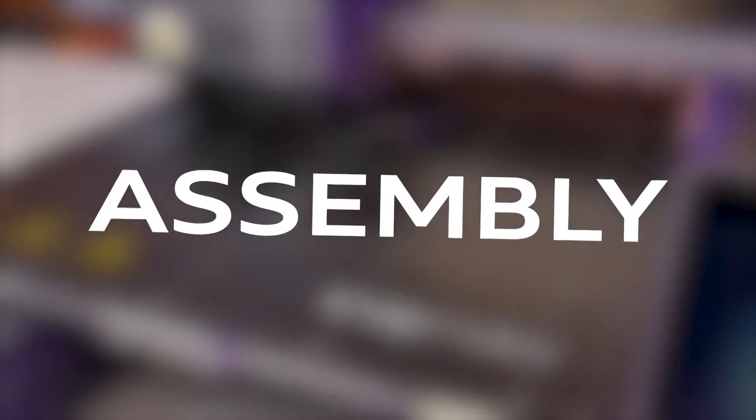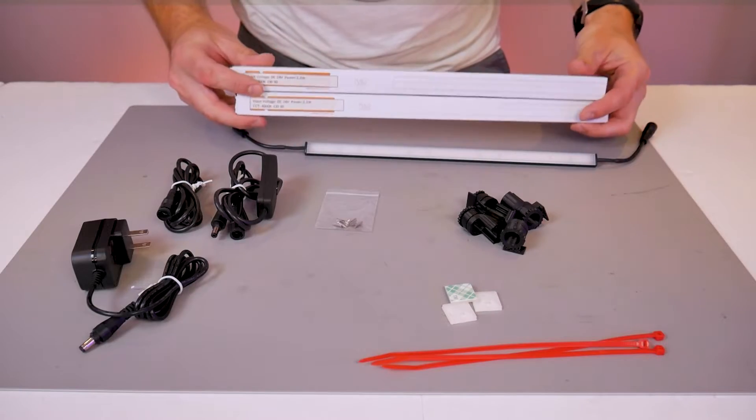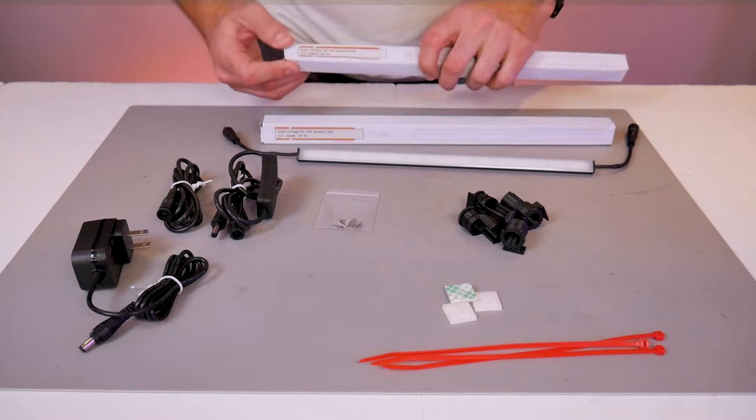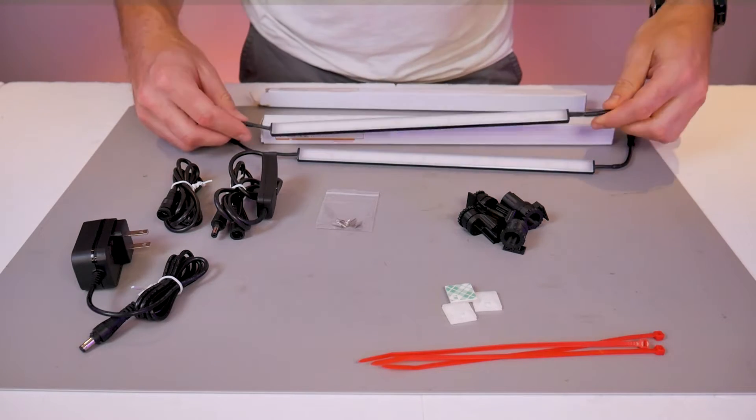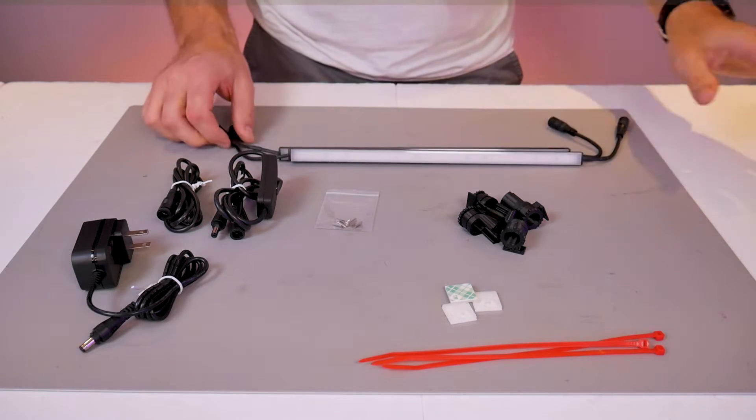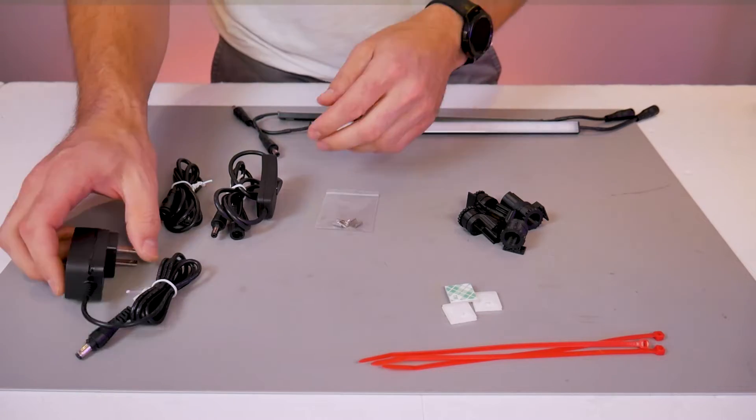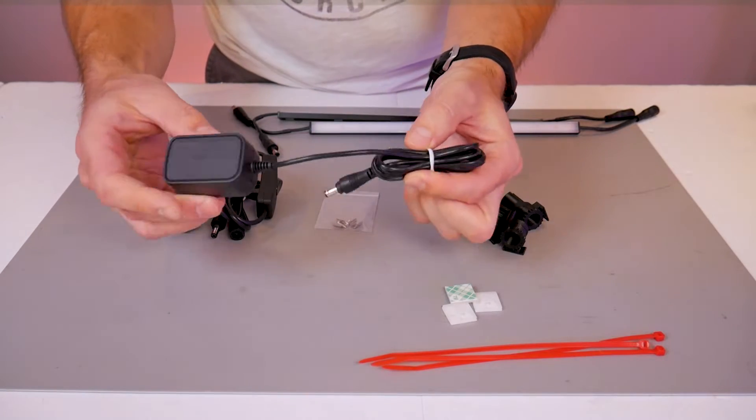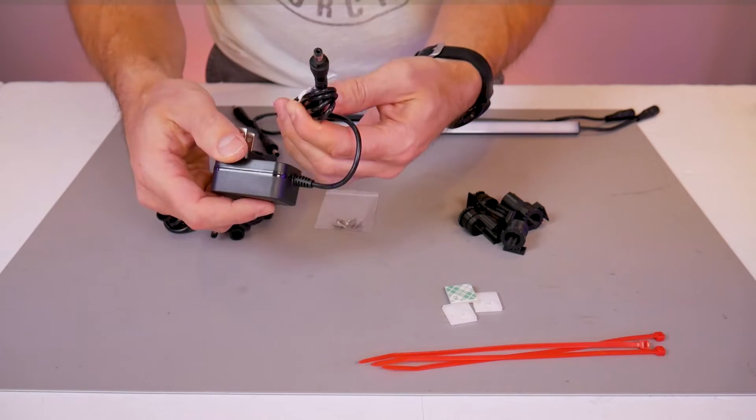First we'll have a look at what's included in the kit. The stars of the show here are these two aluminum diffused LED bars. To power the LEDs there is a wall adapter. It is the North American style plug but it is rated up to 240 volts, so if you're outside of North America you'll need some sort of adapter.